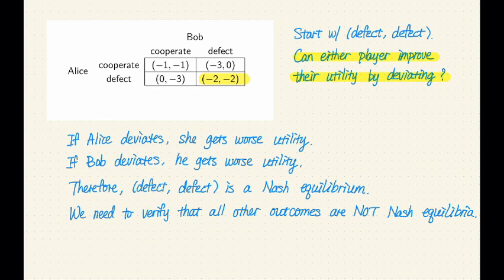So in other words, if I prefer a particular action, regardless of what the other players are doing, then I definitely also prefer this action if I'm considering what the other players are doing. So in the future, if you see an outcome that's a dominant strategy equilibrium, then you know right away that it must be a Nash equilibrium as well.